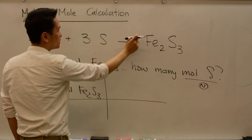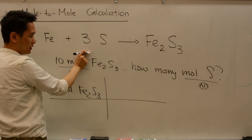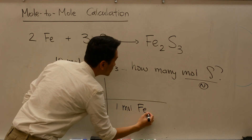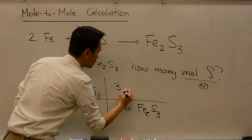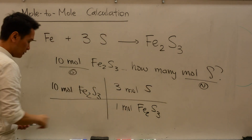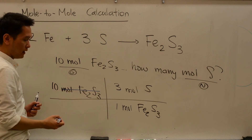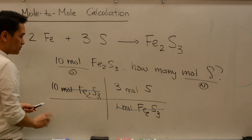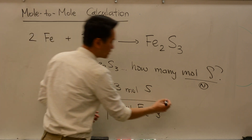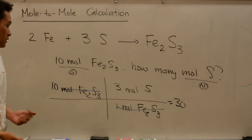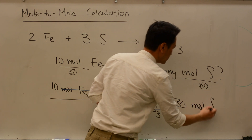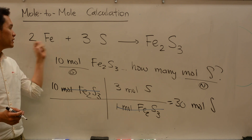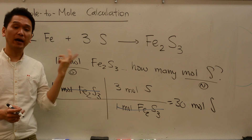In this chemical equation there is a ratio of 1 to 3. For every one mole of the product, we have 3 moles of sulfur. Moles of Fe2S3 cancel out, giving you moles of sulfur. So basically 10 times 3 is 30 moles of sulfur. Mole-to-mole calculation is basically using the coefficients in the balanced chemical equation.